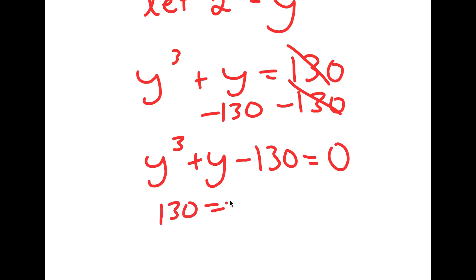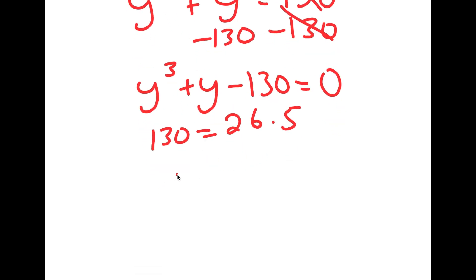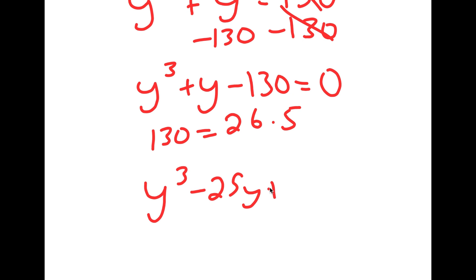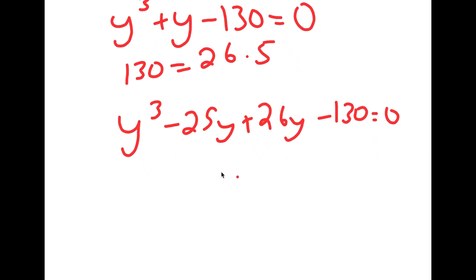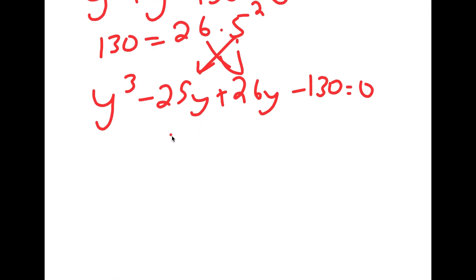Now, 130 is the same thing as 26 times 5. So I'm going to rewrite this as y to the power of 3 minus 25y plus 26y minus 130 is equal to 0, because 5 squared is 25, and 26 goes over here, and negative 25y plus 26y is equal to y. Now, this gets me to factoring out by grouping.